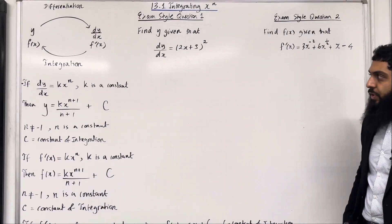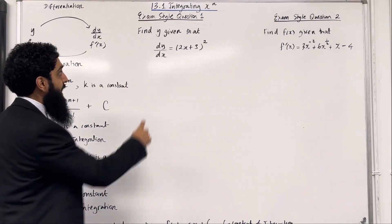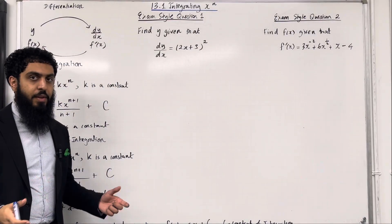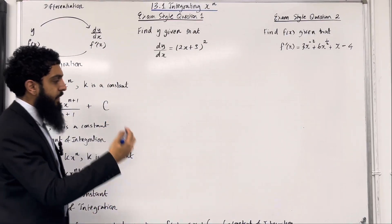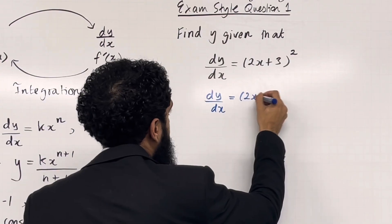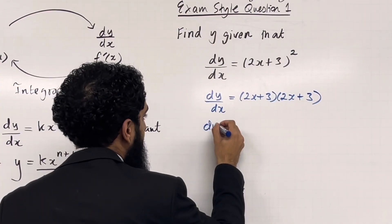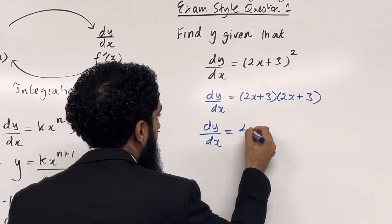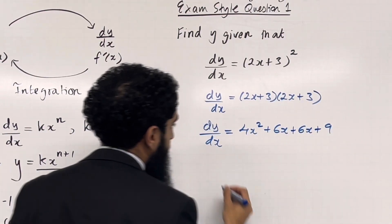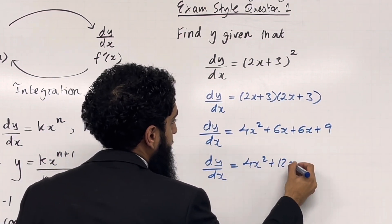Let's have a look at exam style question 1. Find y given that dy/dx equals (2x + 3)². Before we start integrating, we need to expand the double brackets. Writing it as (2x + 3)(2x + 3) and expanding gives dy/dx = 4x² + 6x + 6x + 9. Simplifying by collecting like terms, we get 4x² + 12x + 9.